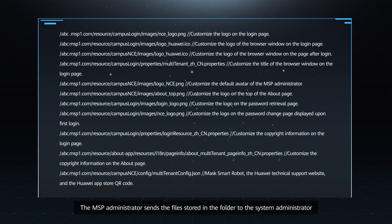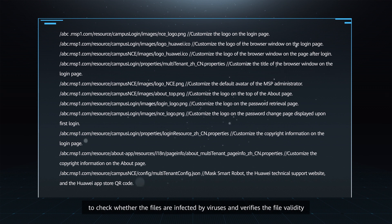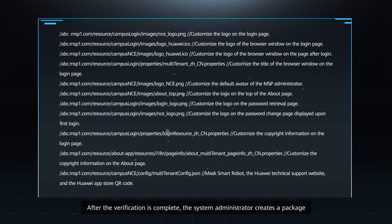The MSP administrator sends the files stored in the folder to the system administrator. After receiving the files, the system administrator scans the files to check whether the files are infected by viruses and verifies the file validity, such as the file name, file name extension, file size, and whether the file contains a cross-site scripting attack. After the verification is complete, the system administrator creates a package. Do not change the folder structure when creating a compressed package.